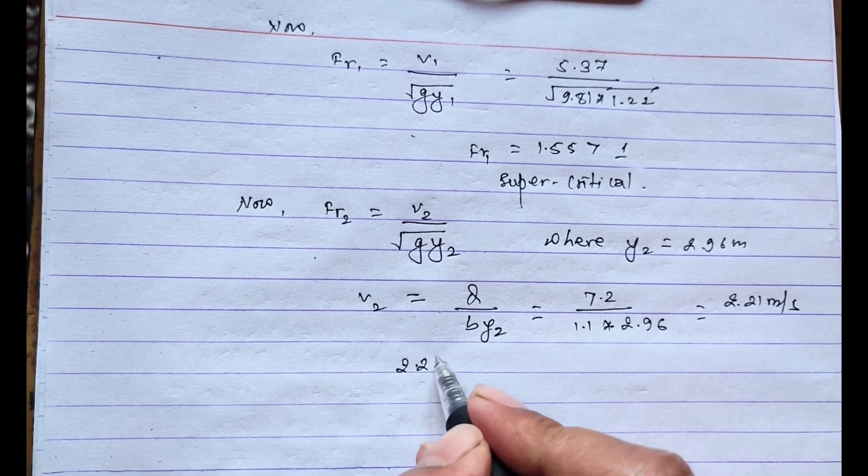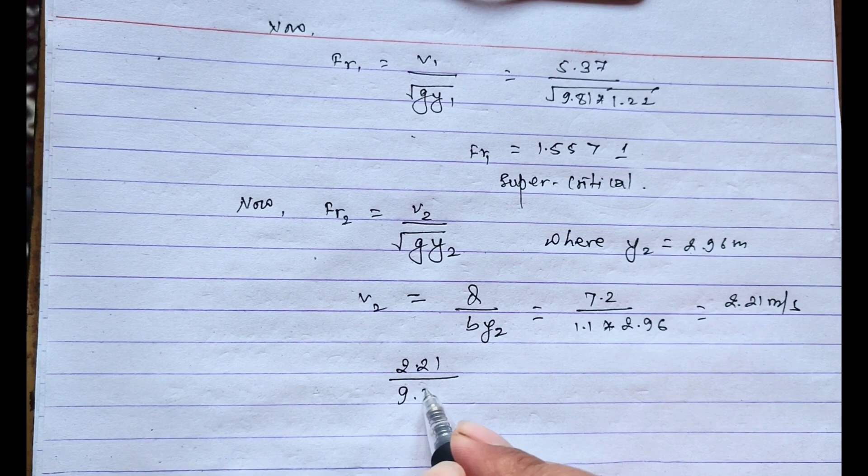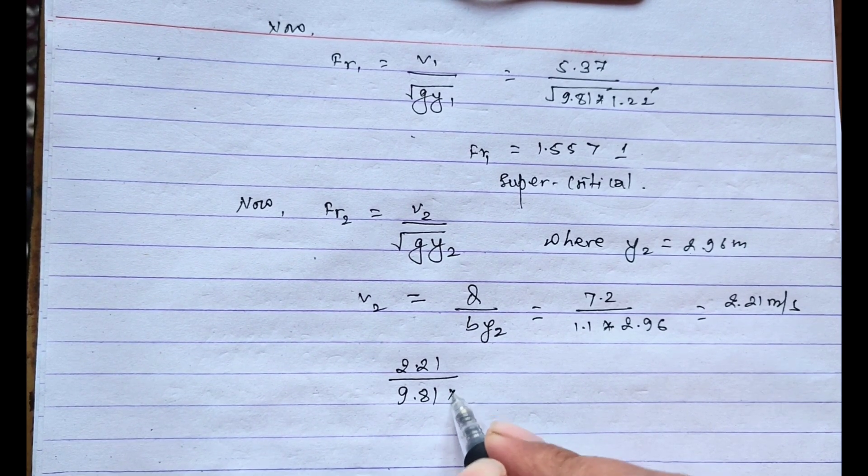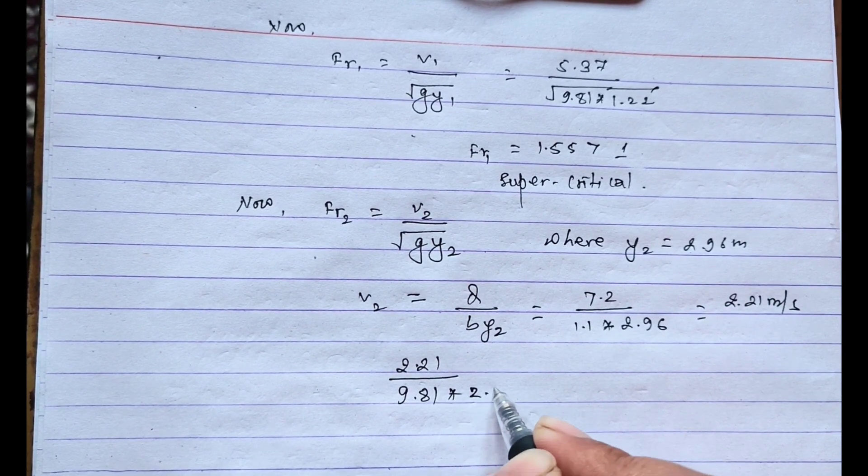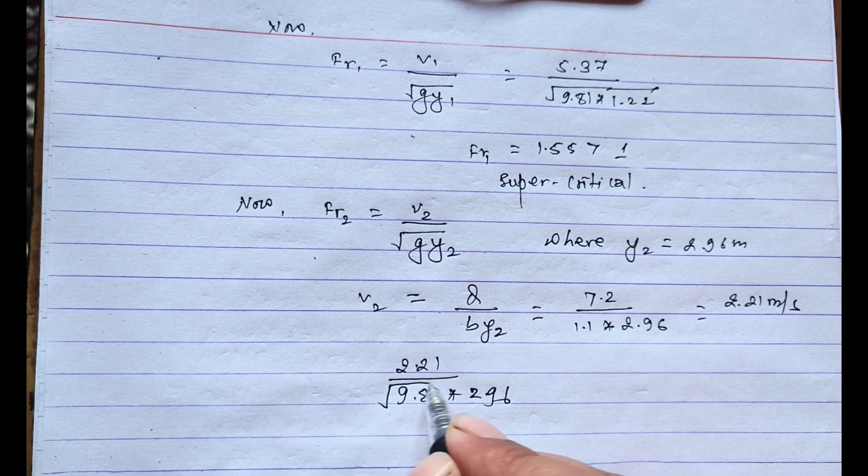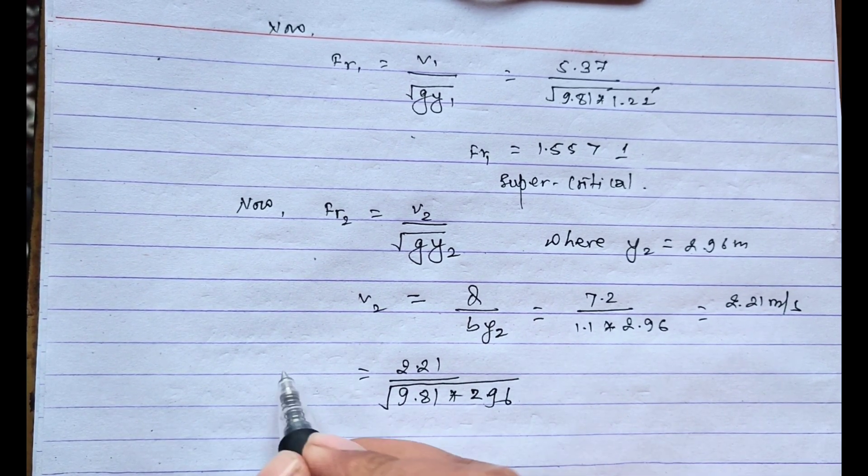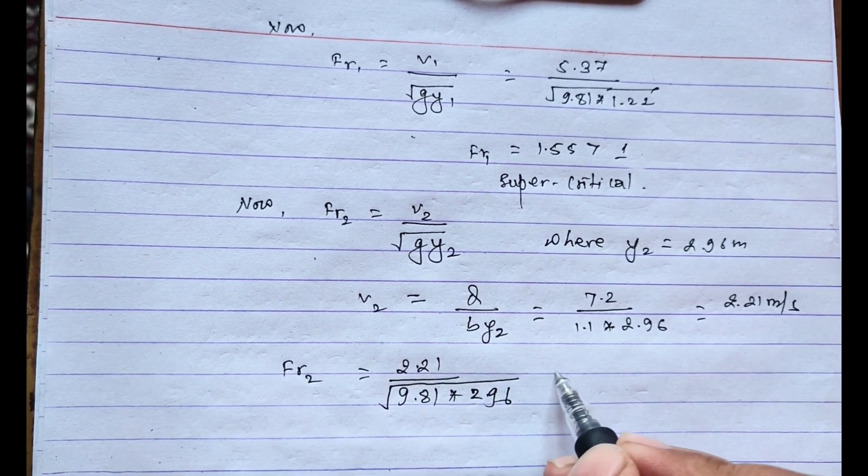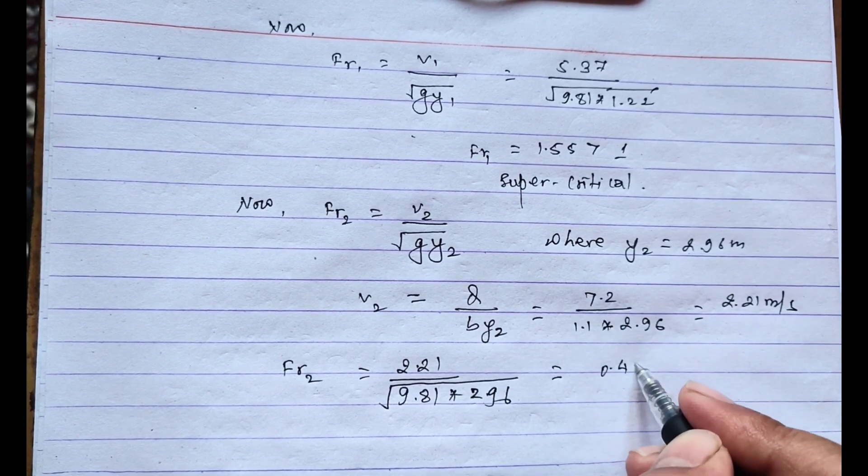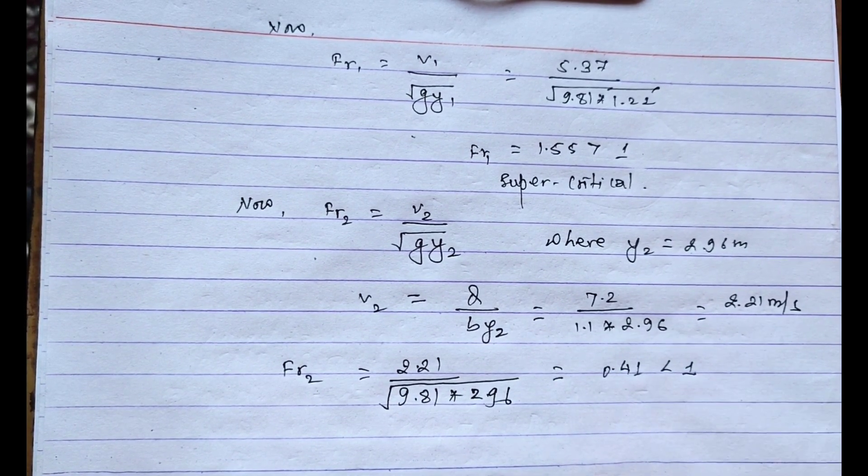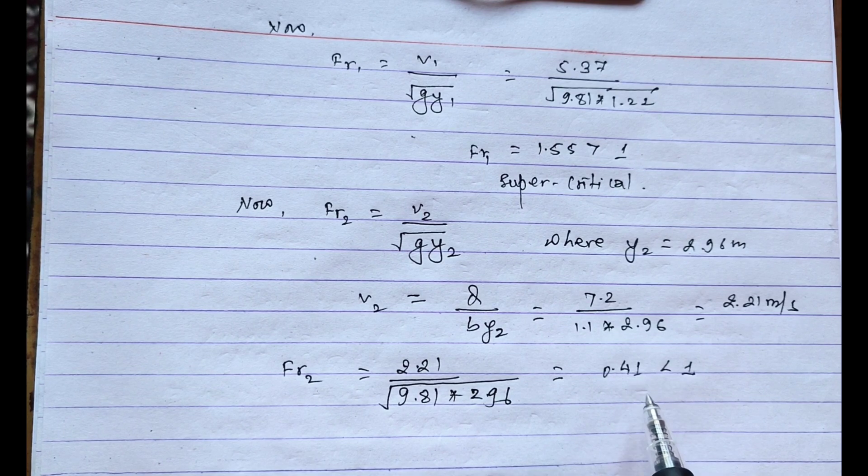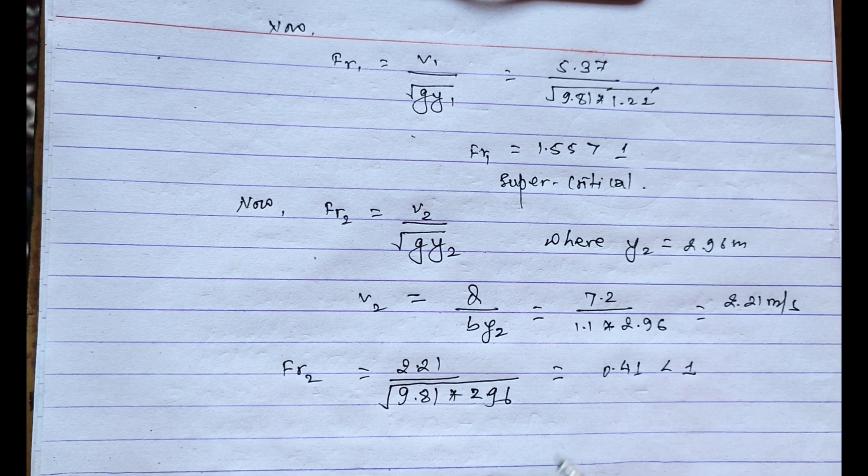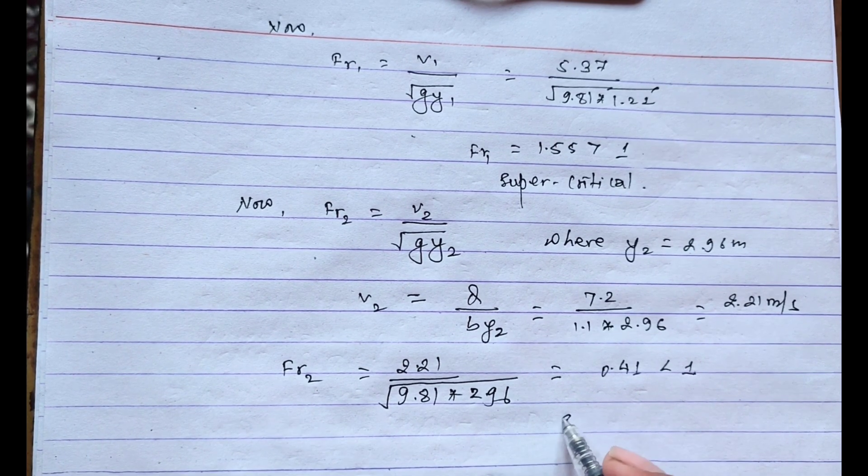Now placing the value of V2 in this equation: 2.21 divided by root 9.81 times 2.96. On solving this, the result will be 0.41, which is less than 1. When the Froude number is less than 1, in such condition the flow will be subcritical.